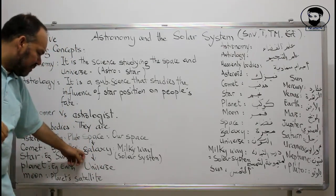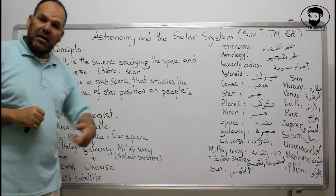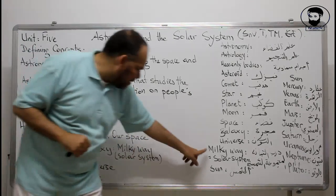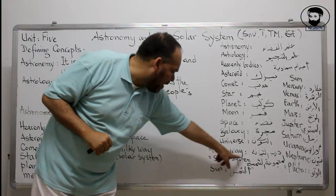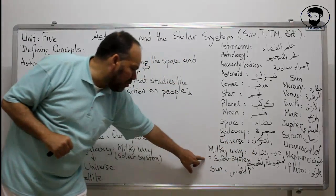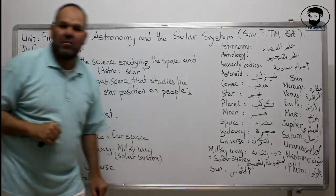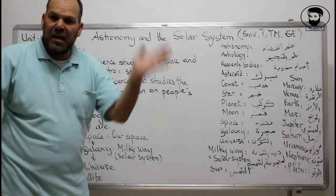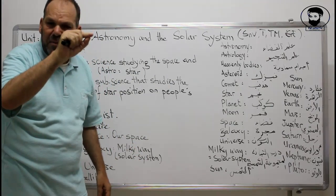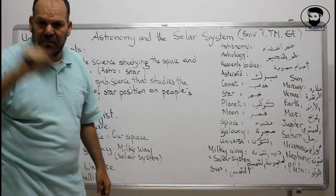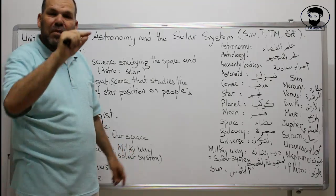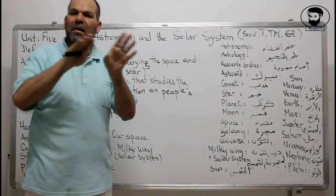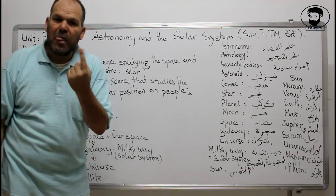Now, you've got a galaxy. Our galaxy in English is called the Milky Way. It is also called the solar system — it has got two names. You may find in a text the solar system, or you might find the Milky Way — it's the same word. Milky Way or solar system — one thing.